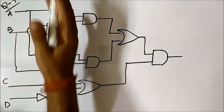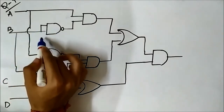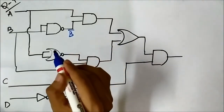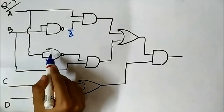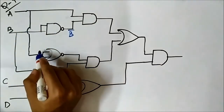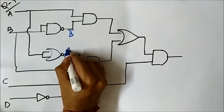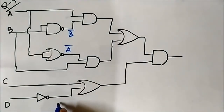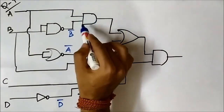In the first layer, the NAND gate has both inputs as B, so it behaves as an inverter and outputs B complement. The NOR gate also behaves as an inverter and outputs A complement. The NOT gate has input D, so the output is D complement. First layer is done.